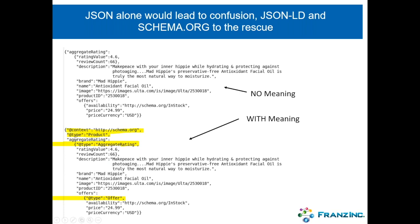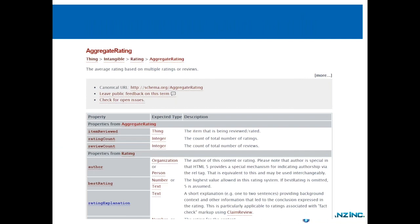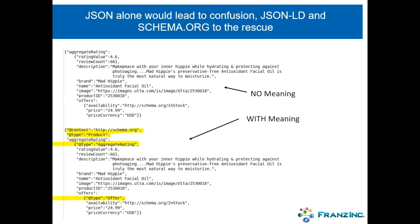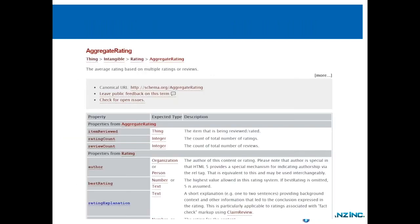The object you're looking at is actually a type of 'Product' with an aggregate rating and a subtype of 'Offer.' This is an object with meaning. Schema.org has about 560 different types of objects with a whole ontology around them. You can go to schema.org, find 'AggregateRating,' and see its properties, data types, and descriptions — and this can be downloaded as a JSON-LD object.